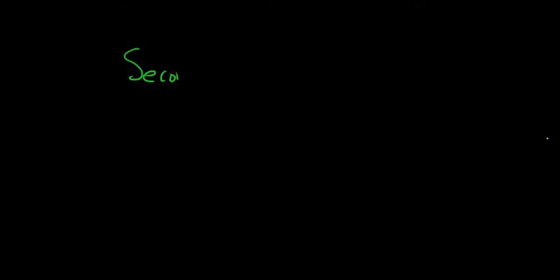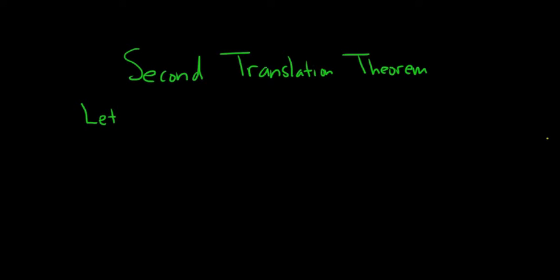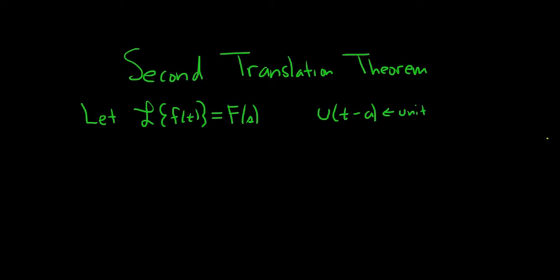In this video, we're going to talk about the second translation theorem. We need some notation to talk about the theorem. We'll start by letting the Laplace of f of t be equal to big F of s. And then u of t minus a — that's going to be the unit step function.